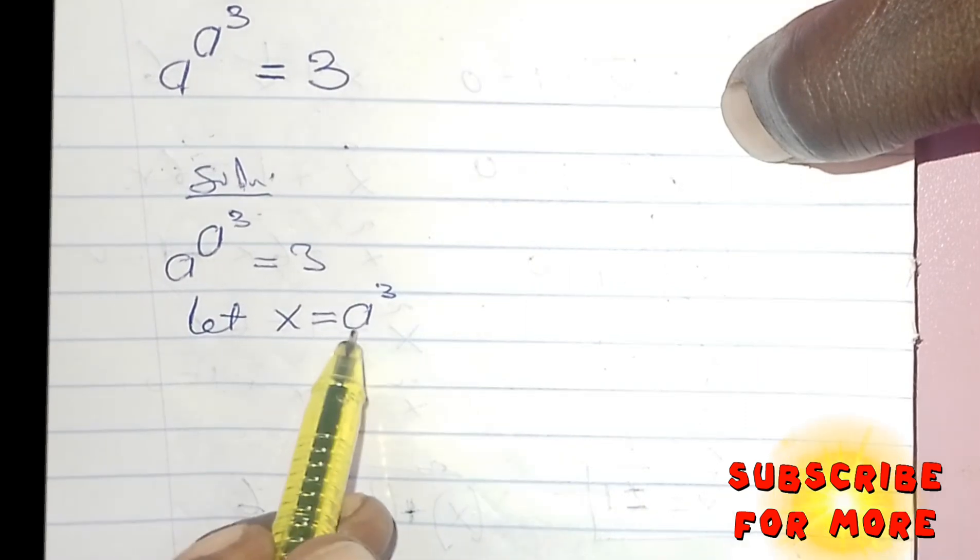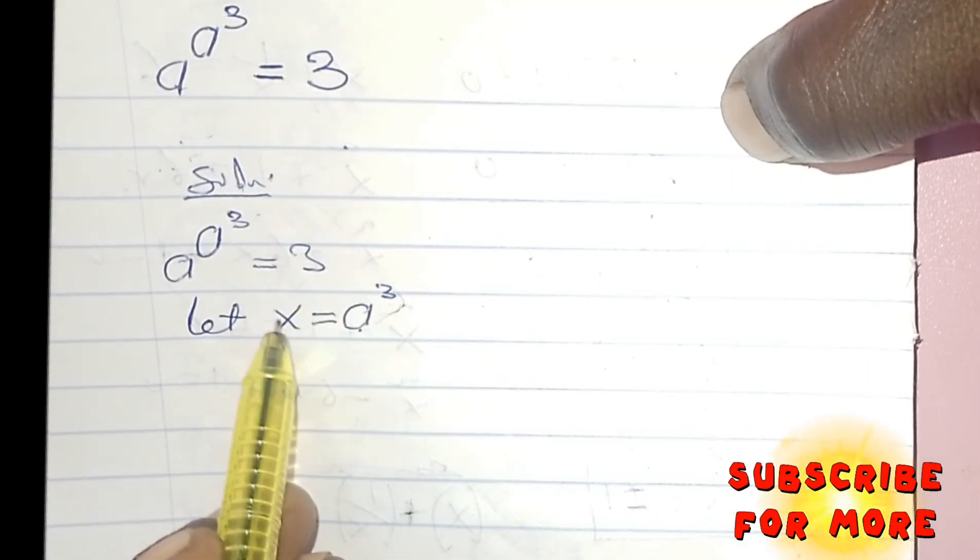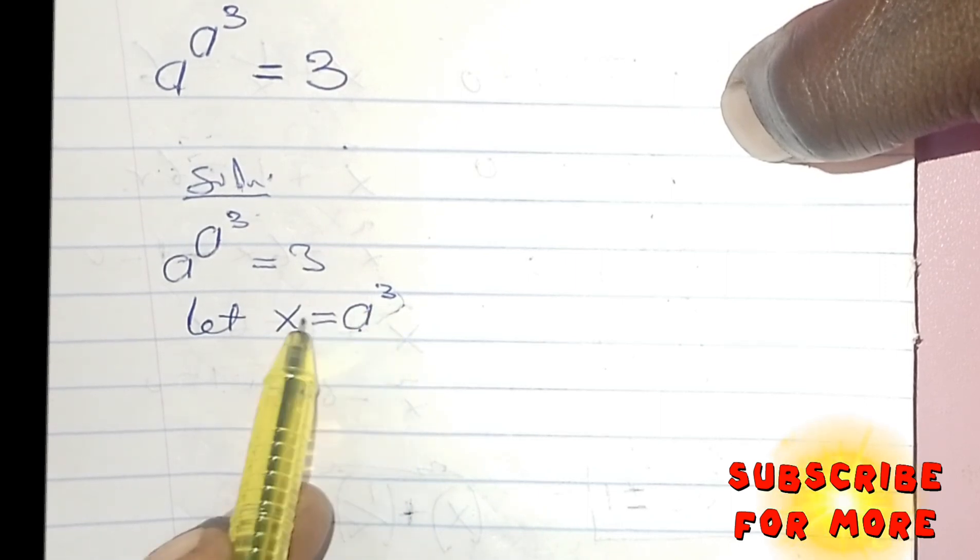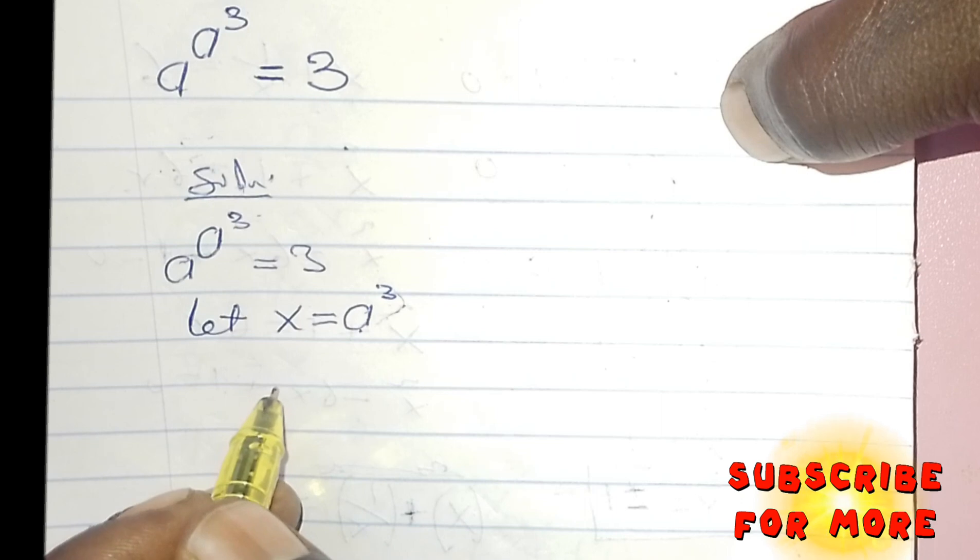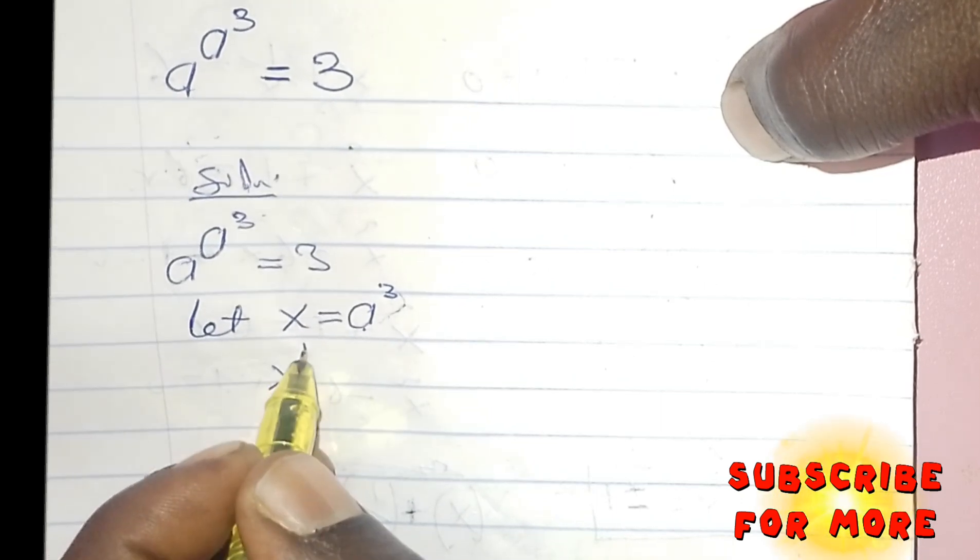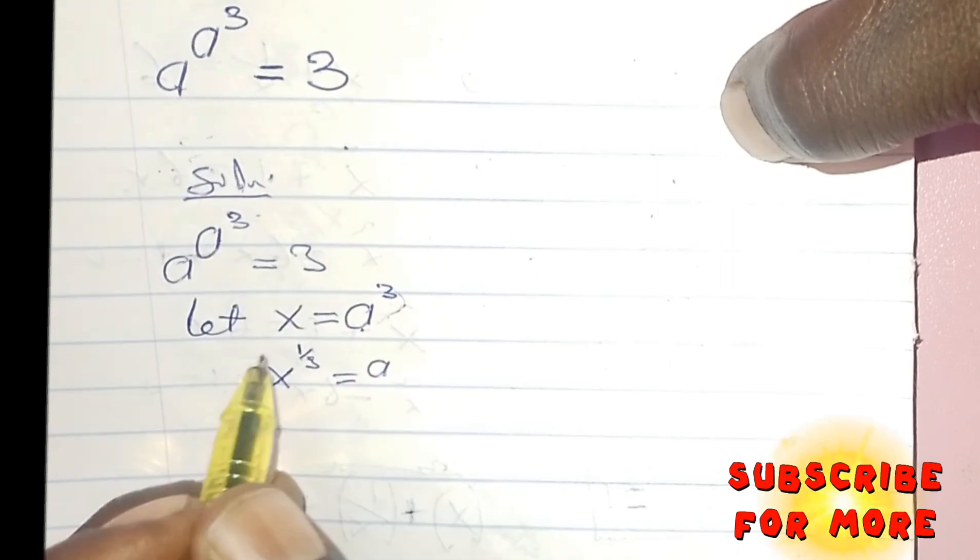So that anywhere I see A to the power of 3, I put X. But when we consider this, we get to understand that in this particular step, I can take the cube root of both sides. That means I'm going to have X to the power of 1 over 3 equals A.